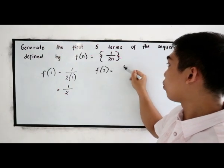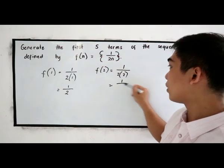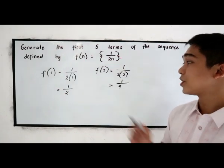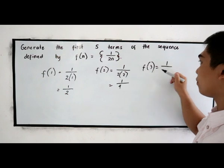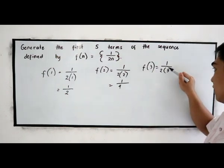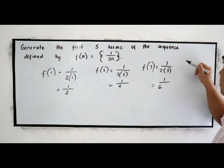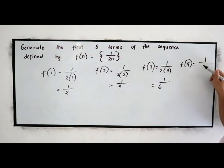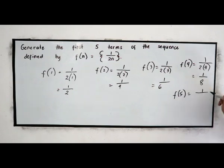Next, f(2), 1 over, change n to 2. 2 times 2. 1 over 2 times 2, which is 4. Next, f(3), 1 over 2 times 3, 6. f(4), 1 over 2 times 4, which is 1 over 8. And last, f(5), 1 over 2 times 5, which is 1 over 10.